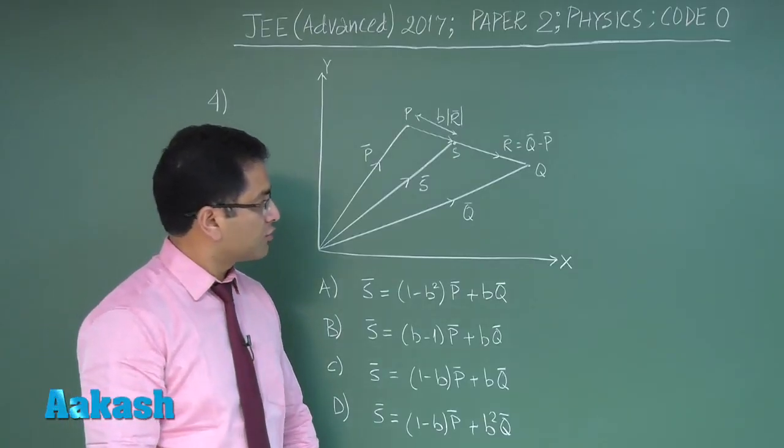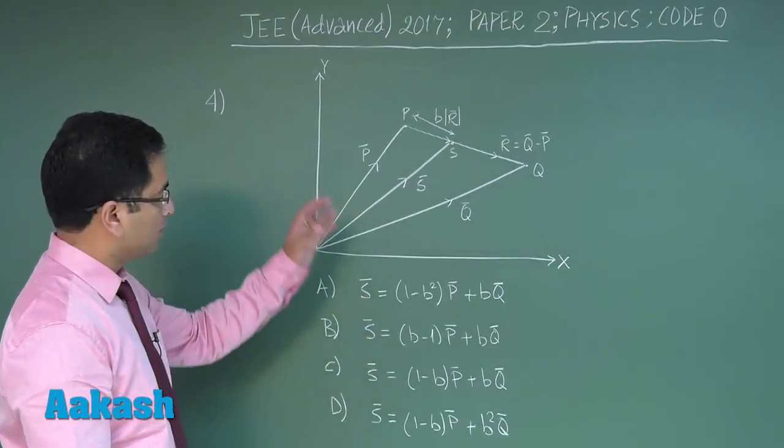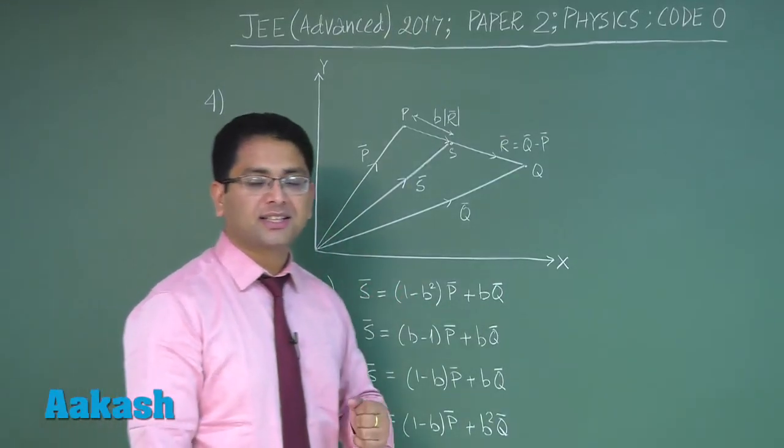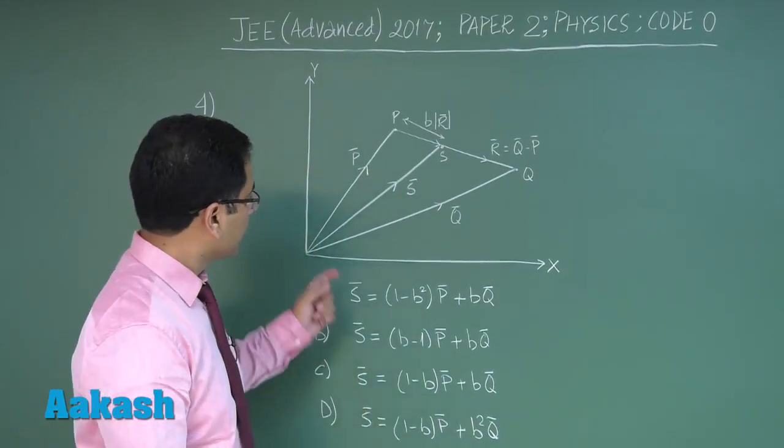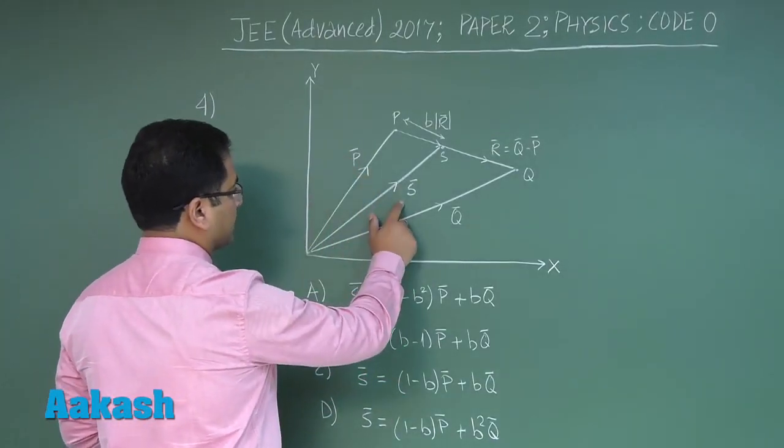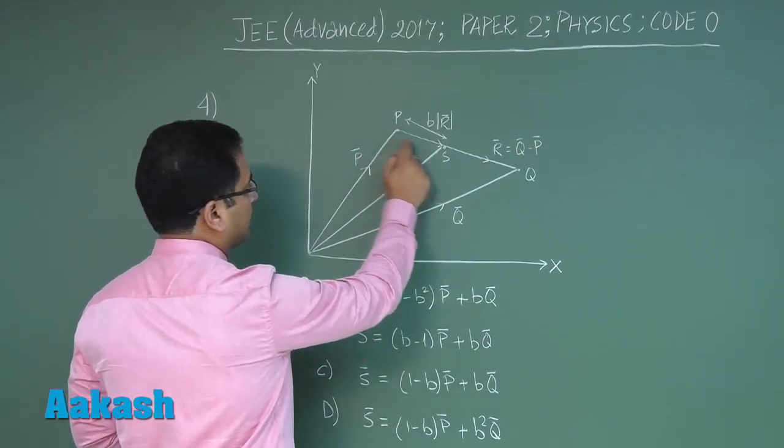Question number four is a straightforward question from the topic of vectors. It's more a question oriented to mathematics. There are three position vectors: p vector, s vector, and q vector, which end at points P, S, and Q respectively.